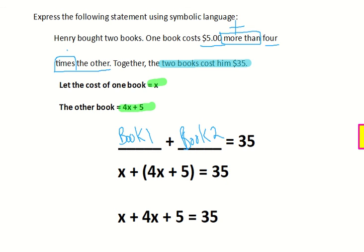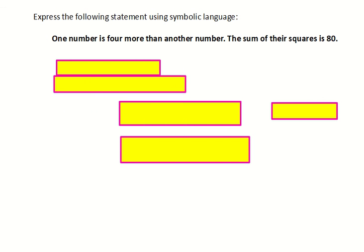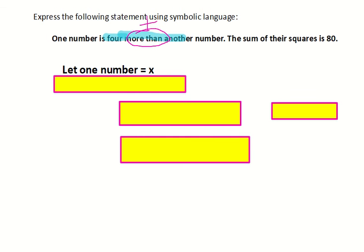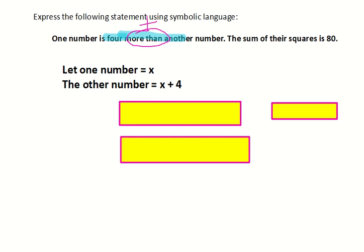Here's one more example. Express the following statement using symbolic language. One number is four more than another number. The sum of their squares is eighty. First, they're telling us one number is four more than another, so I'll start with a let statement and let one number equal x. Since the other number is four more, 'four more than' means to add four. So the other number is x plus four.